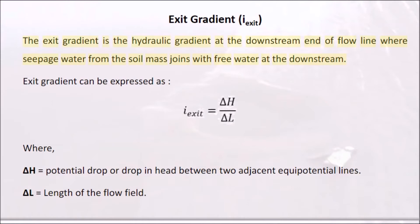The exit gradient is the hydraulic gradient at the downstream end of a flow line, where seepage water from the soil mass joins free water at the downstream end. The exit gradient can be expressed as ie = Δh / l, where Δh is the potential drop between two adjacent equipotential lines and l is the length of the flow field.